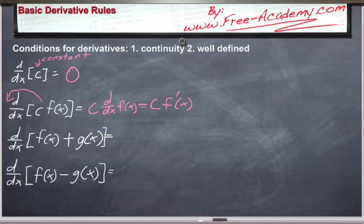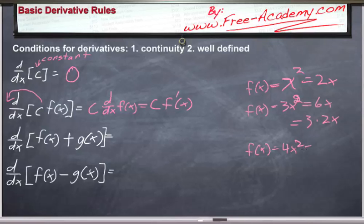For example, we found the derivative of f of x equals x squared to be equal to 2x, but then we also found f of x times 3x squared was equal to 6x, which of course is the same as 3 times 2x, and f of x of, I think we found 4x squared at one point, that was equal to 8x, which is of course 4 times x squared. And this always holds up.